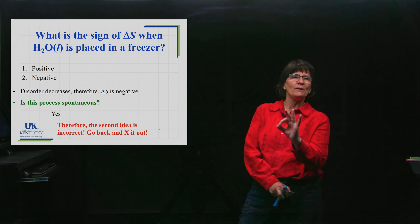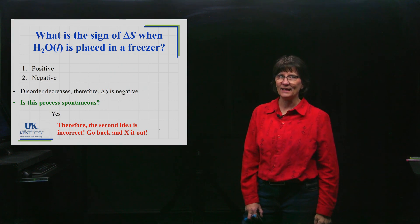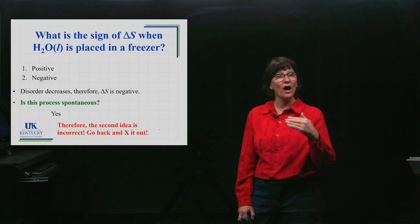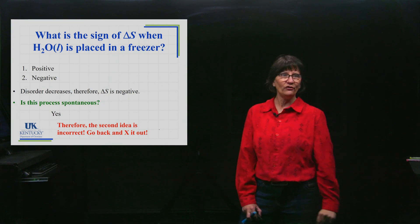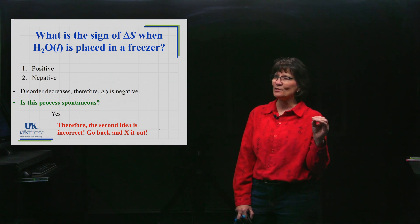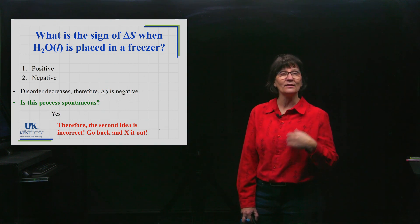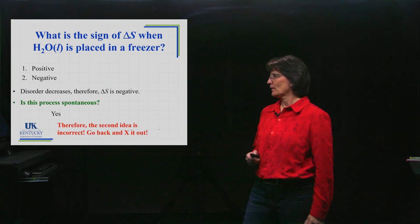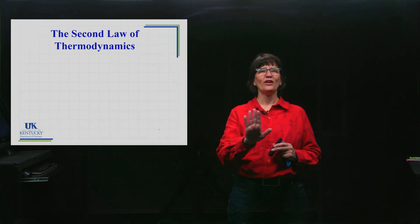Thermodynamics is about predicting whether a process will occur spontaneously. Delta H does not perfectly predict it, though spontaneous processes are very often exothermic. Delta S doesn't perfectly predict it either, though more often than not a spontaneous process has a positive delta S. But neither is a perfect predictor — we're ready for our perfect predictor, and it's so perfect it's called the Second Law.